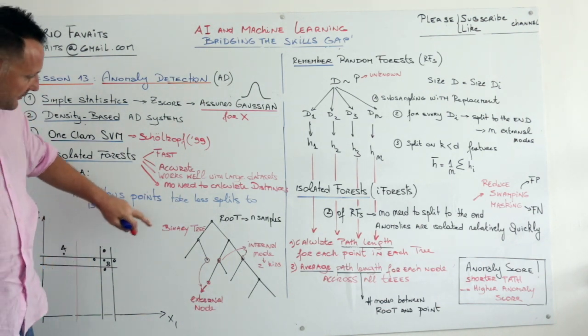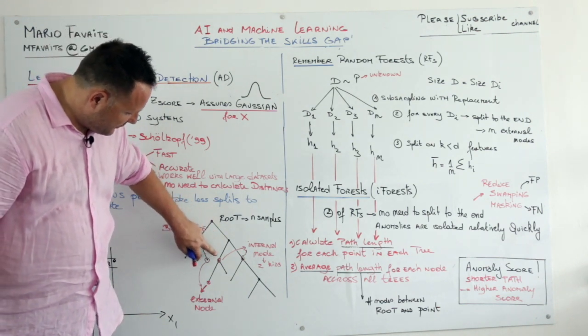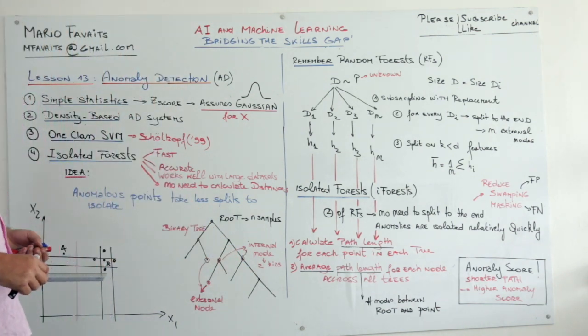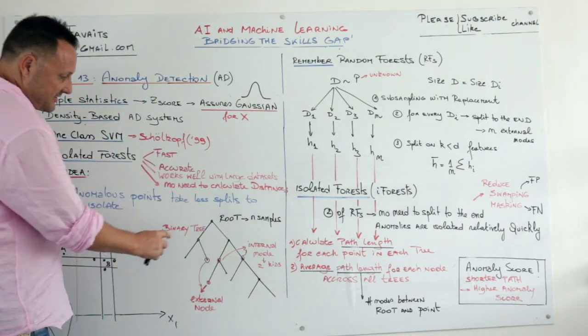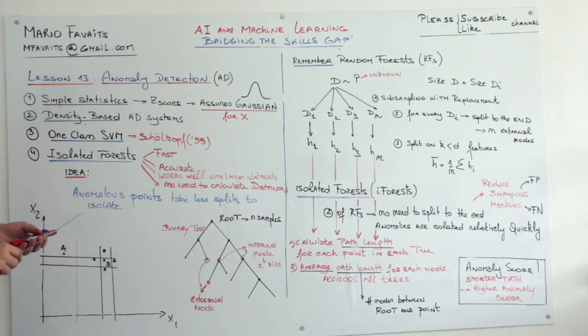So B I need 4 splits, 1, 2, 3, 4, whereas A I get one split and I have A. So that's the idea.